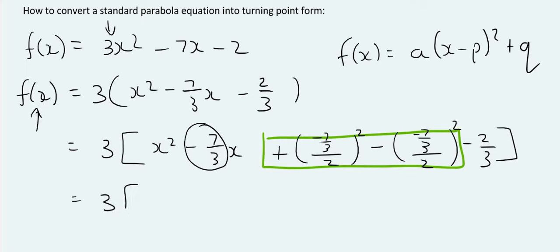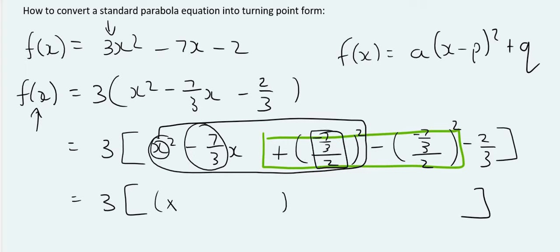So now, within the bigger square bracket, these three parts here, they're going to go into a smaller little bracket. So, we take this x over here, and we take this part over here. So, that's minus 7 over 3 over 2 squared, and then all of this gets typed in on the calculator.